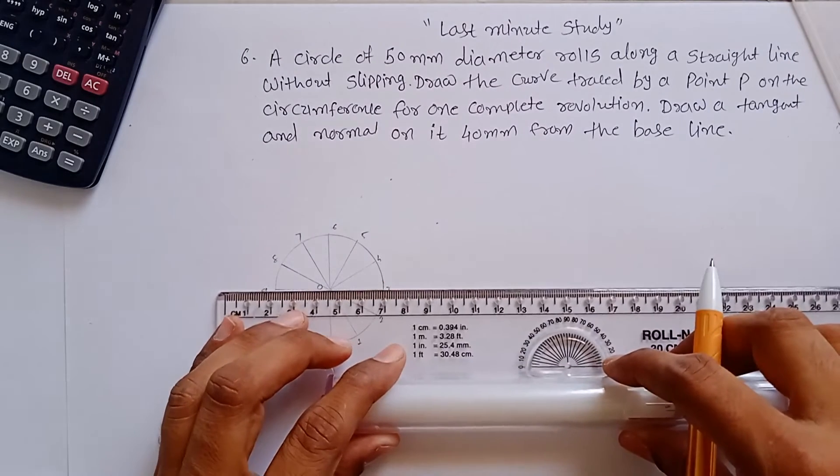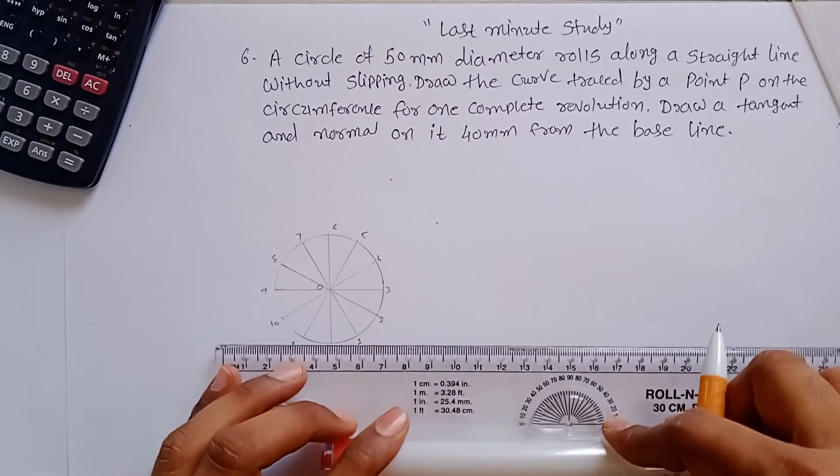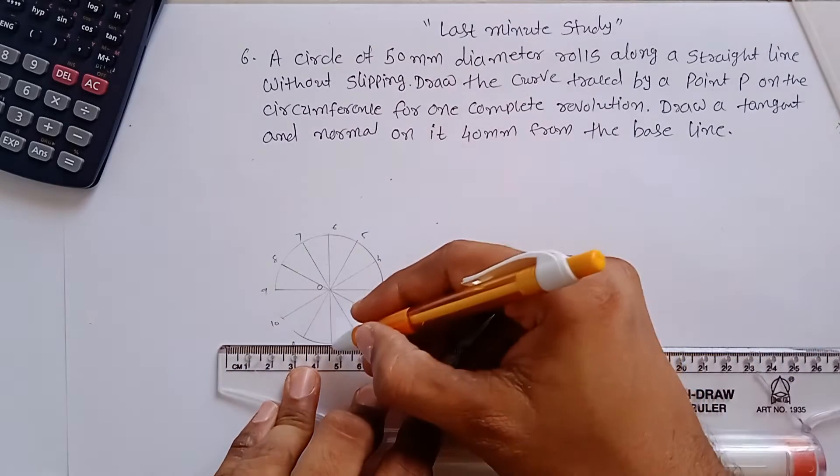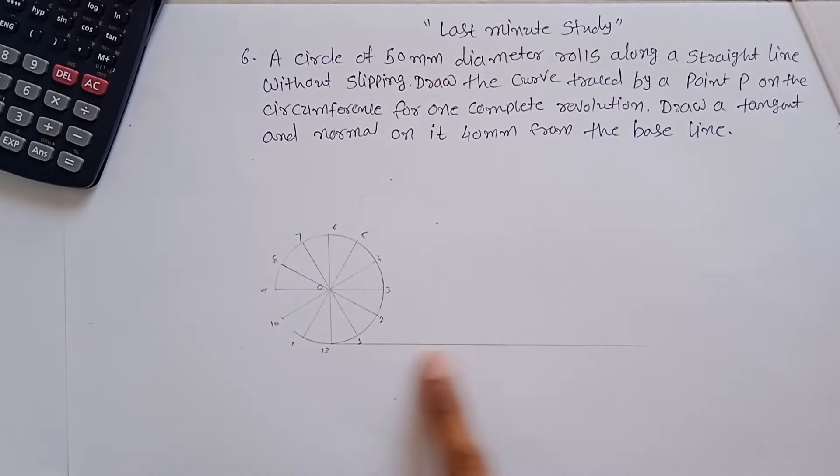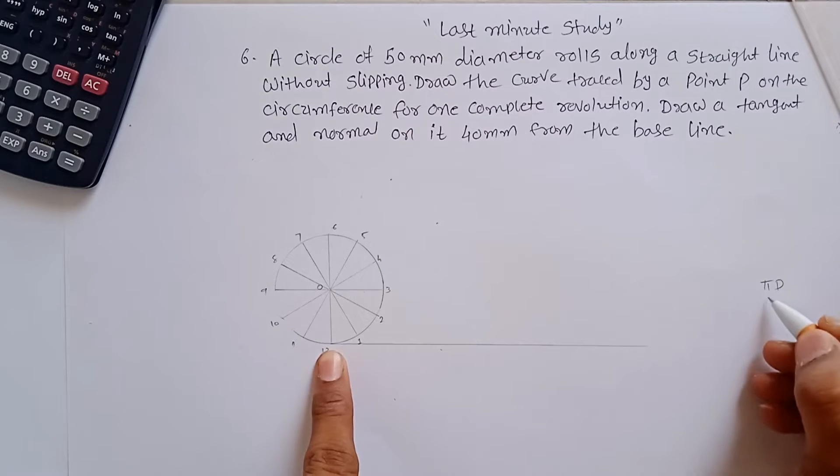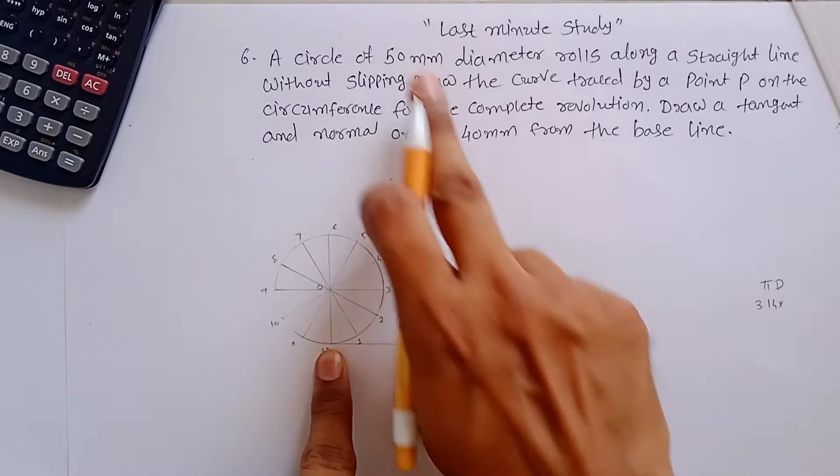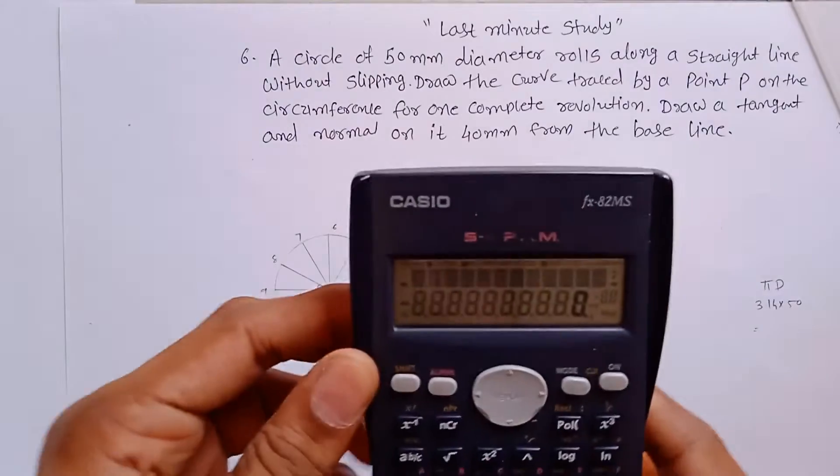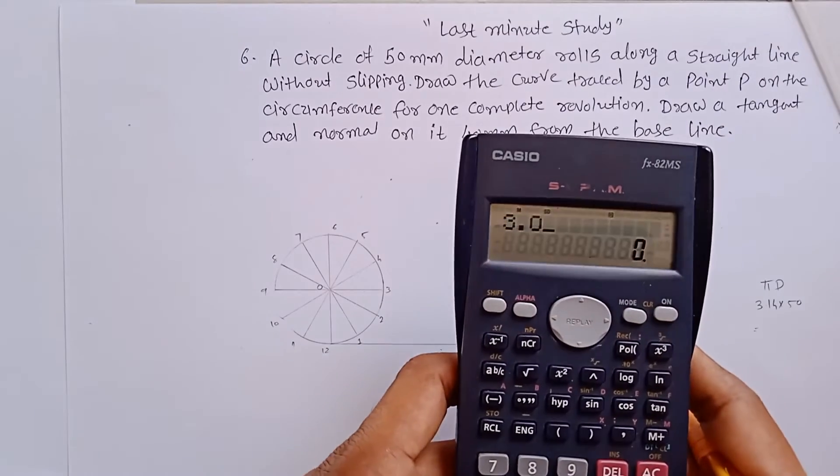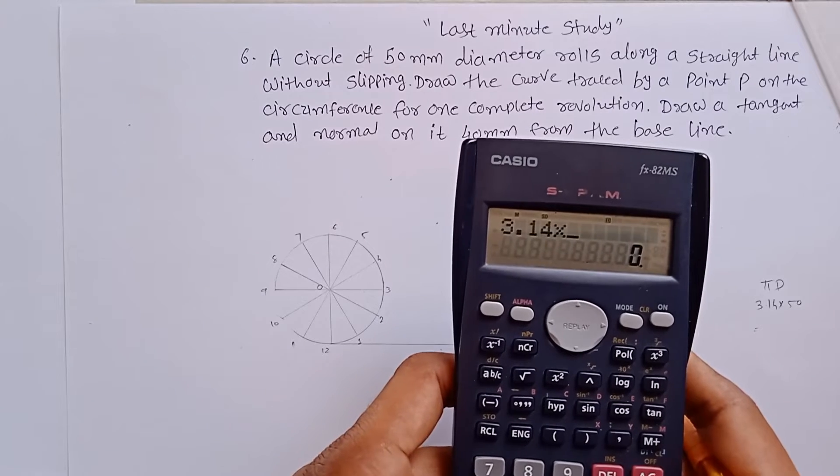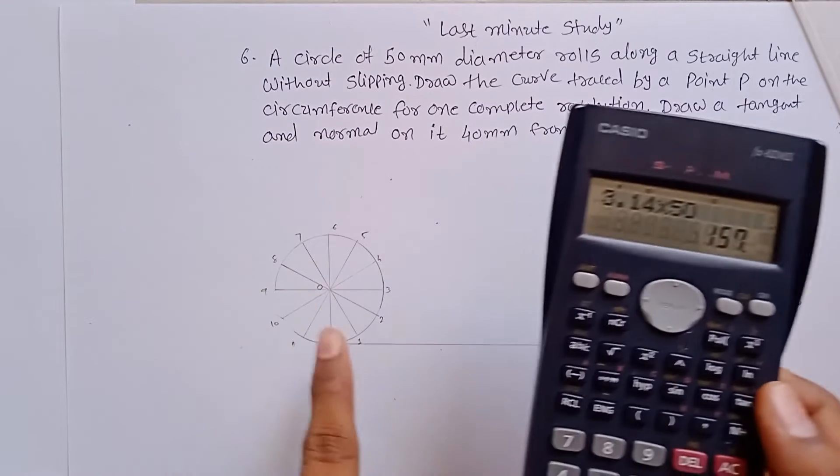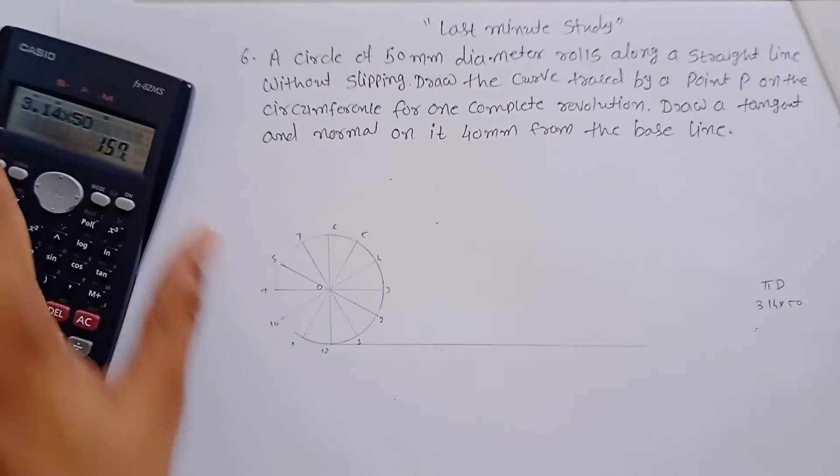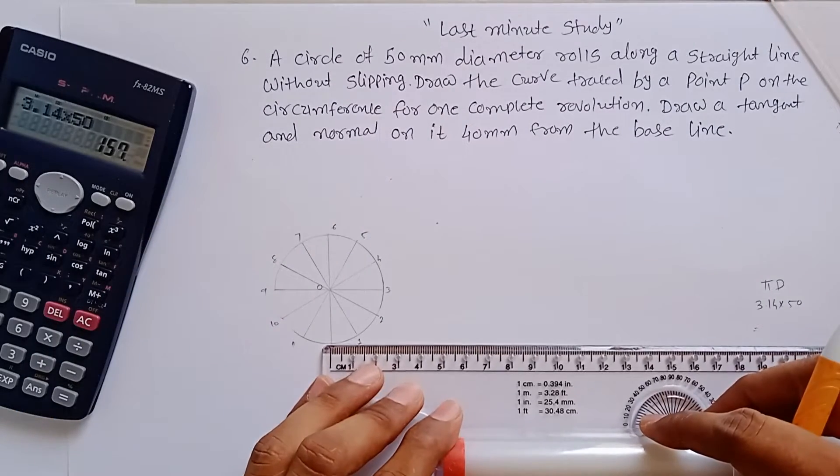Now draw a horizontal line from point 12. This line is a tangent of this circle. The length of this line is πD - π into diameter of the circle, which is 50mm. So 3.14 into 50mm, so the length of this line must be 157mm.